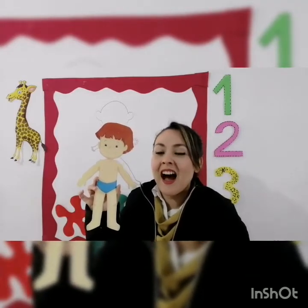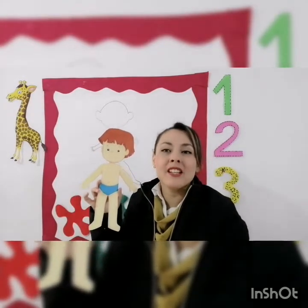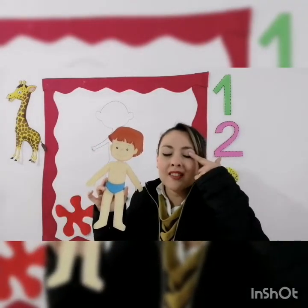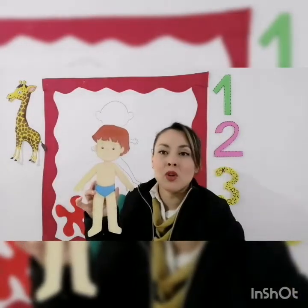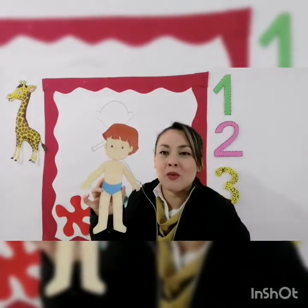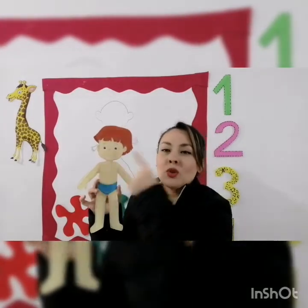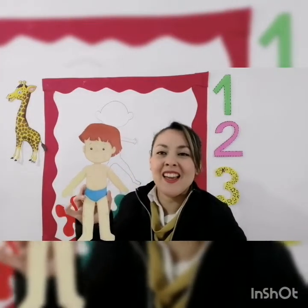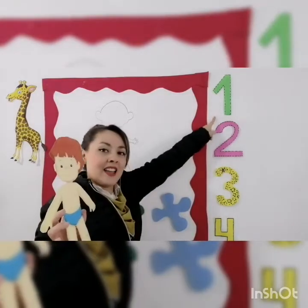¿Y ojos? ¿Cómo se dice ojos? Ojos se dice eyes. Muy bien. Digan conmigo: eyes. Very good. Ojos se dice eyes. ¿Y cuántos ojitos tenemos? ¿One? ¿Un ojito? No, ¿verdad que no? One and two. Dos ojitos. Muy bien. One and two. Dos ojitos.